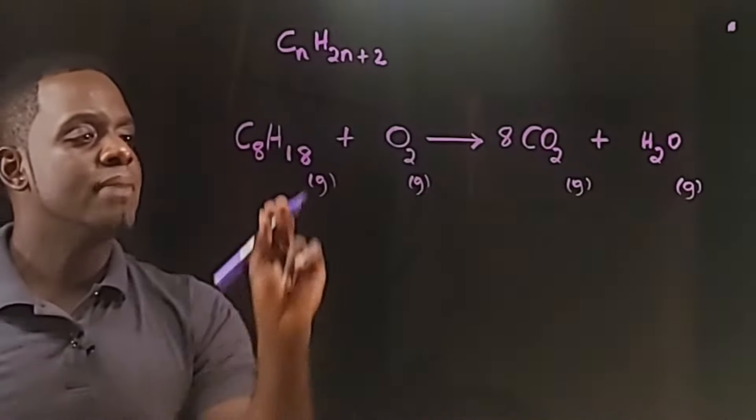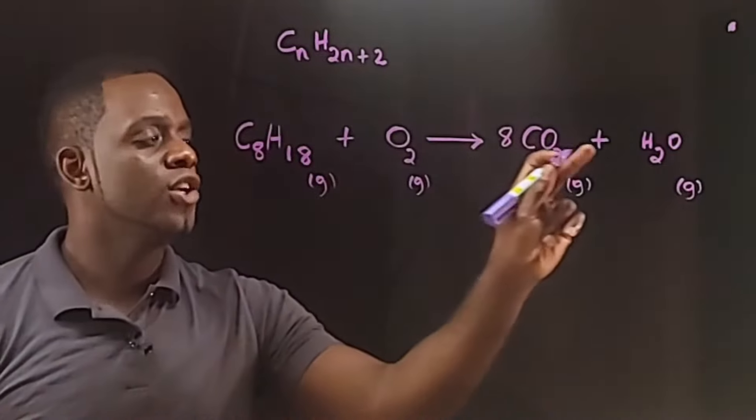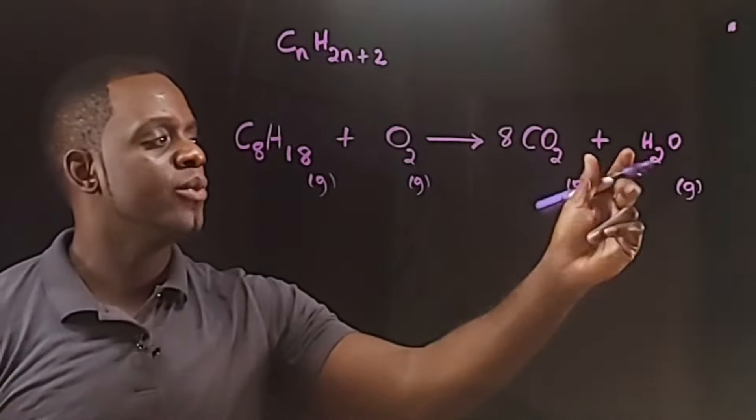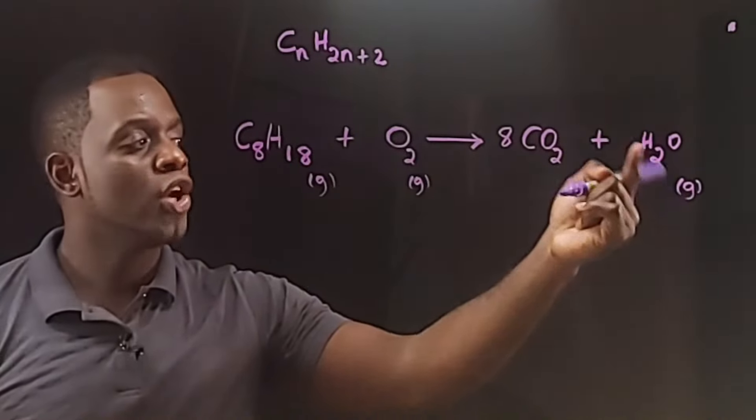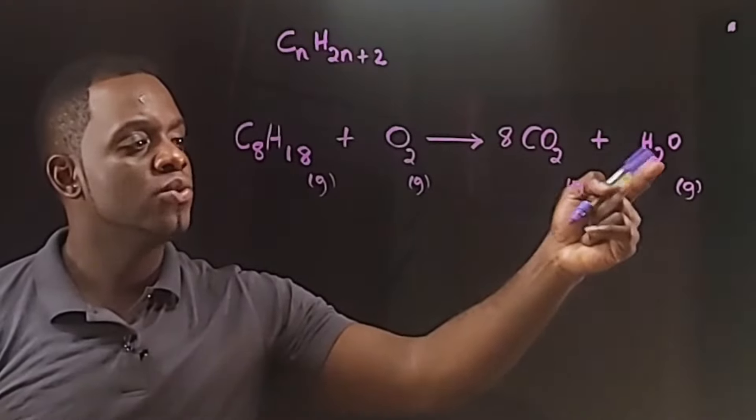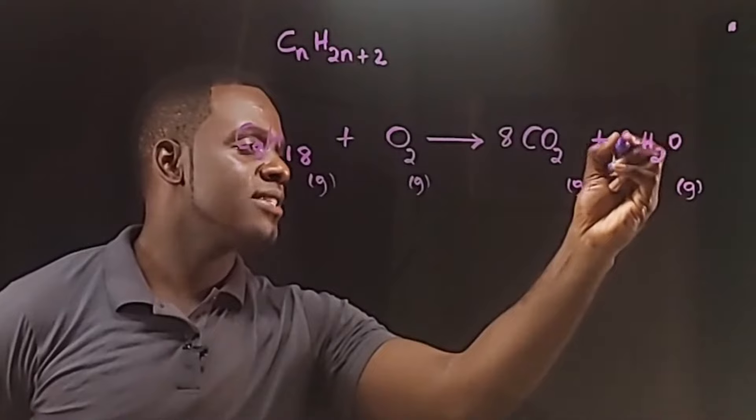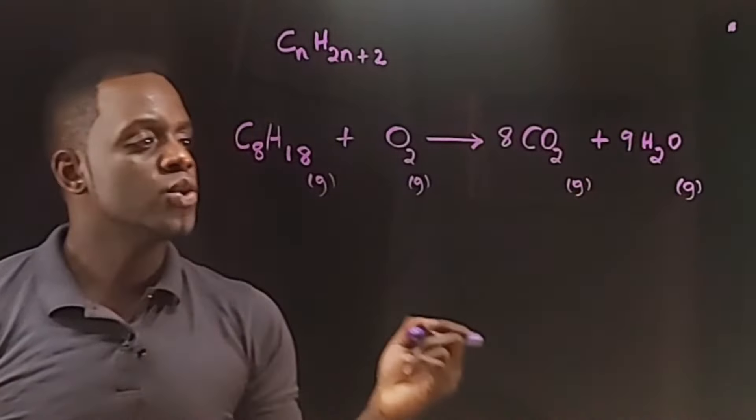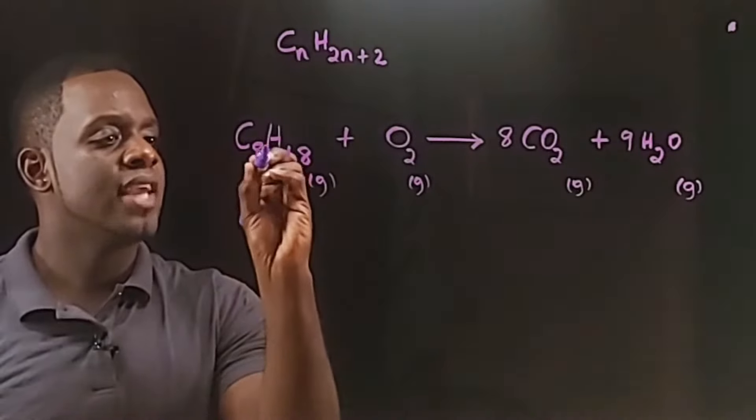Next, we need to balance the hydrogen atoms in the chemical equation. We have 18 on the left hand side and we have only 2 on the right. We need to write a coefficient here that when multiplied by 2 gives us 18, and you rightly said it, that is 9. Alright, so now we have balanced the carbon atoms and the hydrogen atoms.